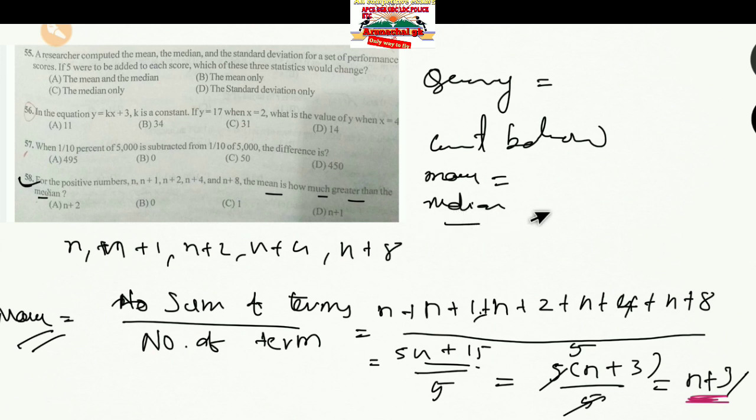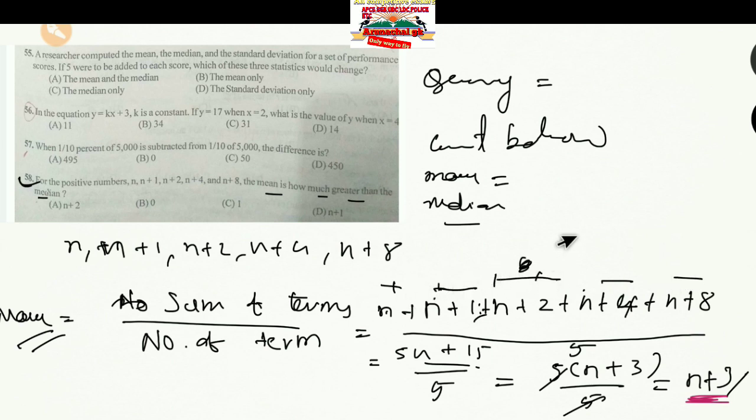Now for the median: with 5 terms, the middle (third) term is the median. Counting: N, N+1, N+2, N+4, N+8 — the third term is N+2. So the median is N + 2.